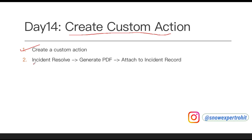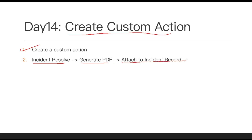The first scenario is that we are going to create an incident, and then the incident will move to the resolve state. The moment it moves to the resolve state, it will generate a PDF and that PDF will be attached to the incident report. There are no actions available in our Flow Designer out of the box to generate a PDF file, so we are going to build our own custom action to generate the PDF and attach it to our incident table.